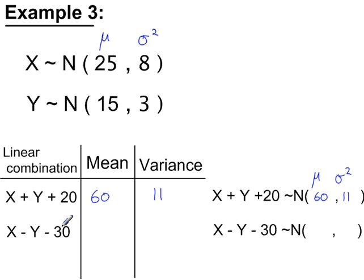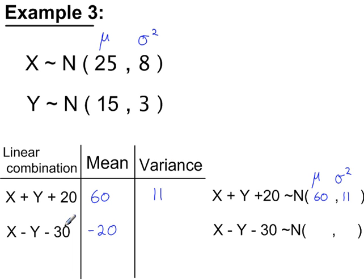The normal variable x minus y minus 30 has a mean of 25 minus 15 minus 30, so the mean is minus 20. Both x and y have a variance, but the minus 30 does not. So we add variances: the variance of x plus the variance of y.